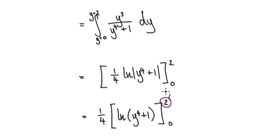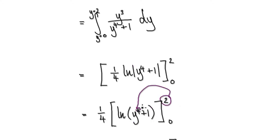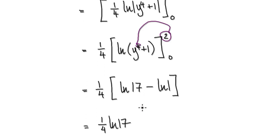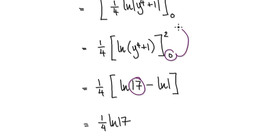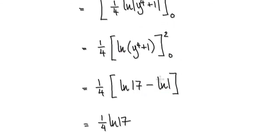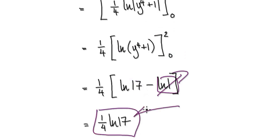Put y equals 2 in: that gives 16 plus 1. Then put y equals 0 in: natural log of 1, which is 0 — so that term disappears. This gives you your final answer.